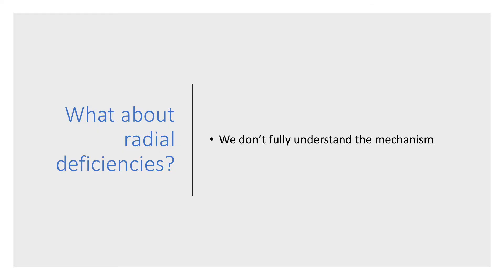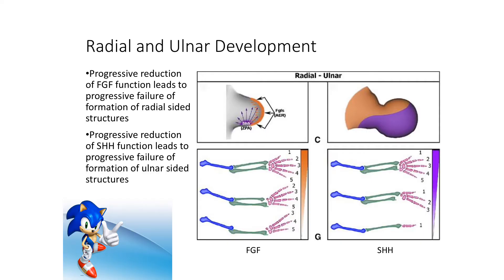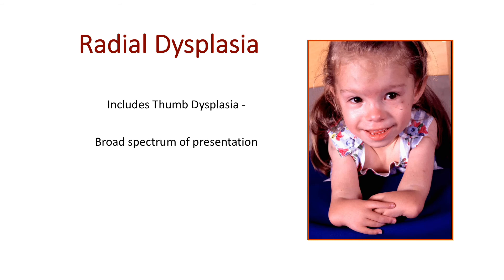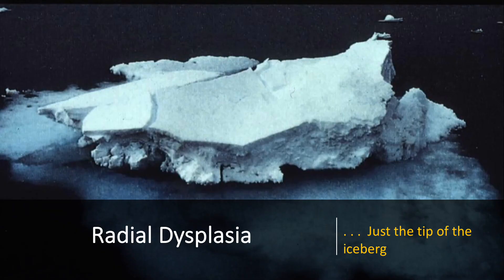What about radial deficiencies? We don't fully understand the mechanism. We know that progressive reduction of fibroblast growth factor function leads to progressive failure of formation of radial-sided structures, but it's different from the ulnar side — where progressive reduction of sonic hedgehog leads to progressive failure of ulnar-sided structures — and it's less direct. Radial dysplasia includes thumb dysplasia, but there's a broad spectrum of presentations and a whole bevy of associated syndromes. Radial dysplasia is just the tip of the iceberg; there's usually something else going on, which is why we don't fully understand the embryology.